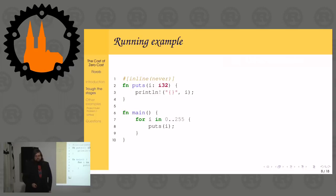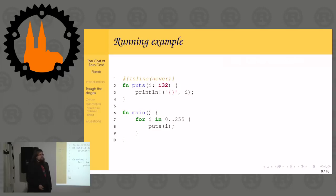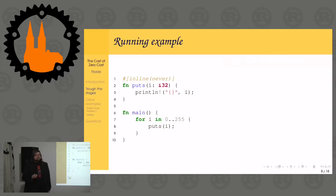Our running example is going to be a very simple for loop that just prints numbers from 0 to 254. I've put a puts function in there annotated as inline(never). The sole reason for that is to make it easier to see what we're actually doing, because println! expands to a whole lot of code and I wanted to focus on the for loop.